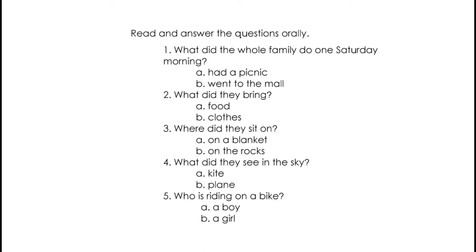Number 3: Where did they sit on? A, on a blanket. B, on the rocks. Correct, letter A, on a blanket. Number 4: What did they see in the sky? A, a kite. B, a plane. Correct, A, a kite. Number 5: Who is riding on a bike? A, a boy. B, a girl. Yes, you are right. It's letter B, a girl.